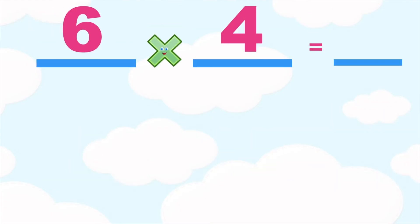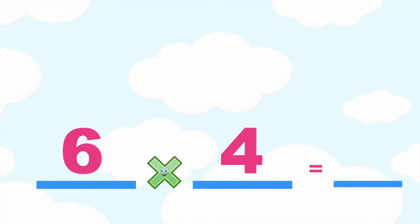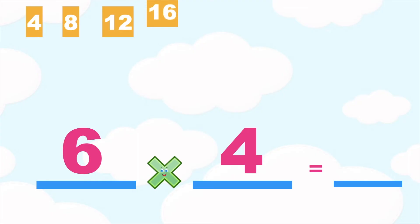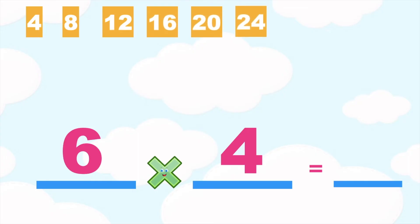How about if we have this? Six times four is equal to blank. Again, to find the product, let's find the sixth multiple of four: four, eight, twelve, sixteen, twenty, twenty-four. So, six times four is equal to twenty-four.